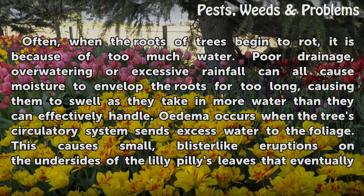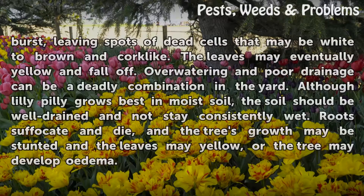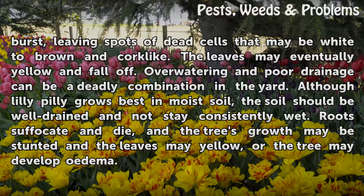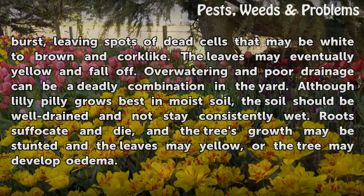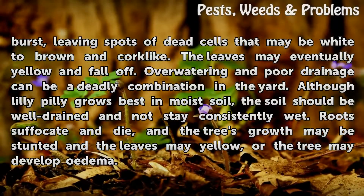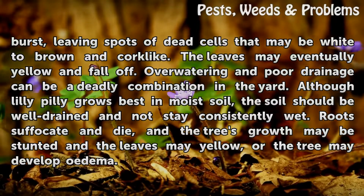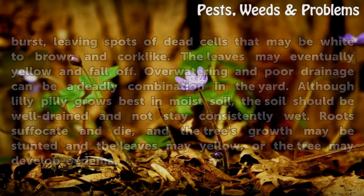This causes small, blister-like eruptions on the undersides of the Lillipilly's leaves that eventually burst, leaving spots of dead cells that may be white to brown and cork-like. The leaves may eventually yellow and fall off. Over-watering and poor drainage can be a deadly combination. Although Lillipilly grows best in moist soil, the soil should be well-drained and not stay consistently wet. Roots suffocate and die, and the tree's growth may be stunted, the leaves may yellow, or the tree may develop edema.